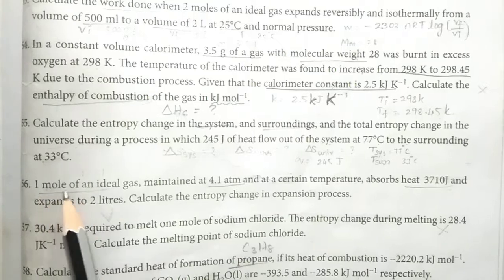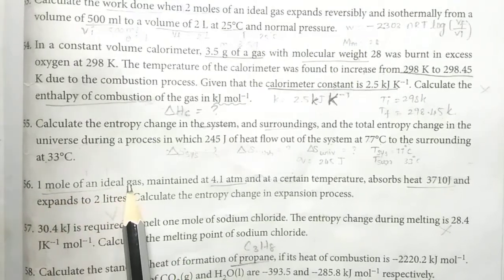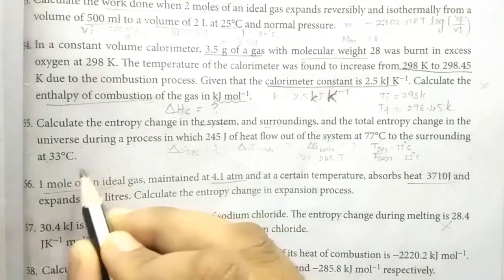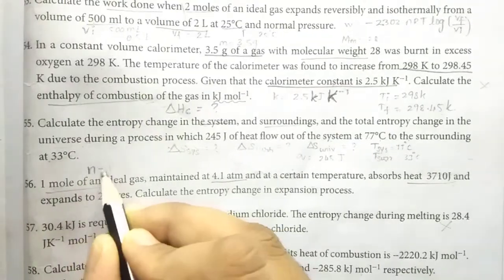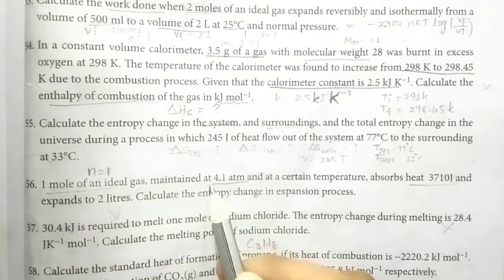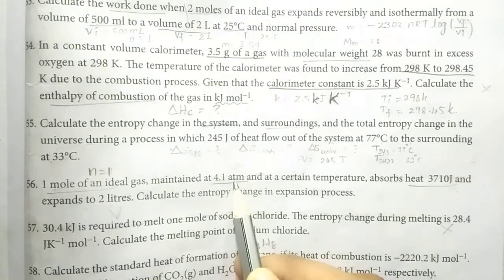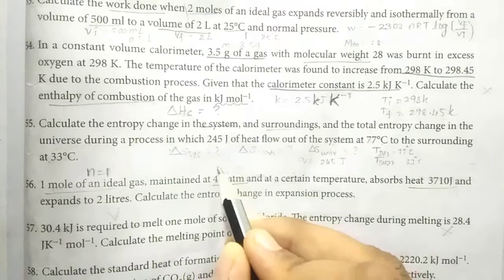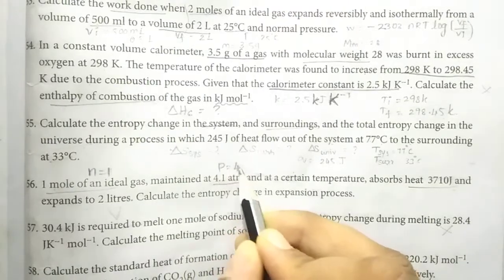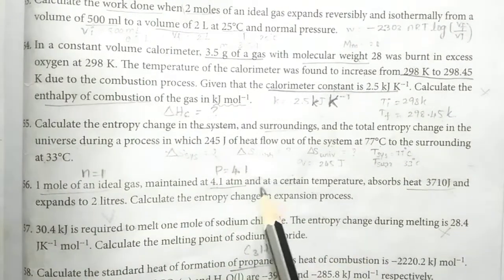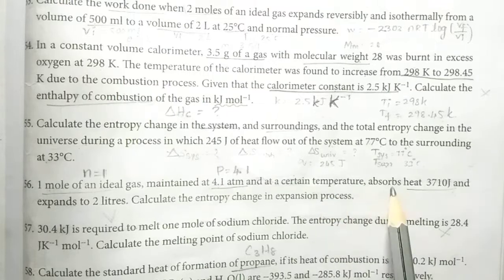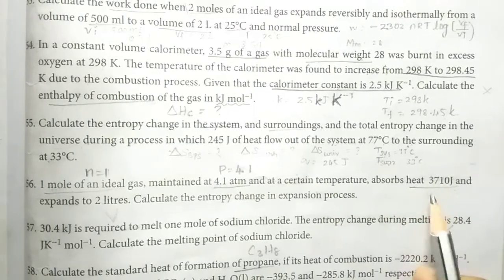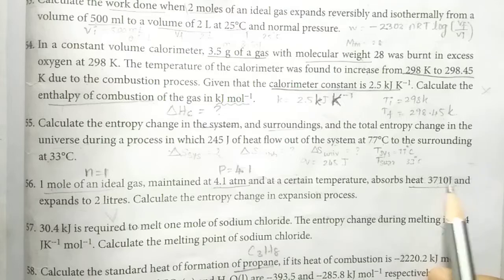In question 56, we have 1 mole of ideal gas, so n is equal to 1. It is maintained at 4.18 atm atmospheric pressure, so pressure is equal to 4.1 atm. At a certain temperature, it absorbs heat of 3,410 J.